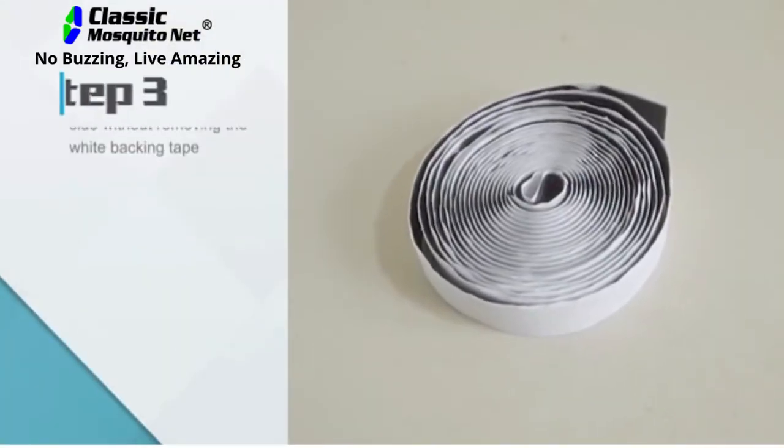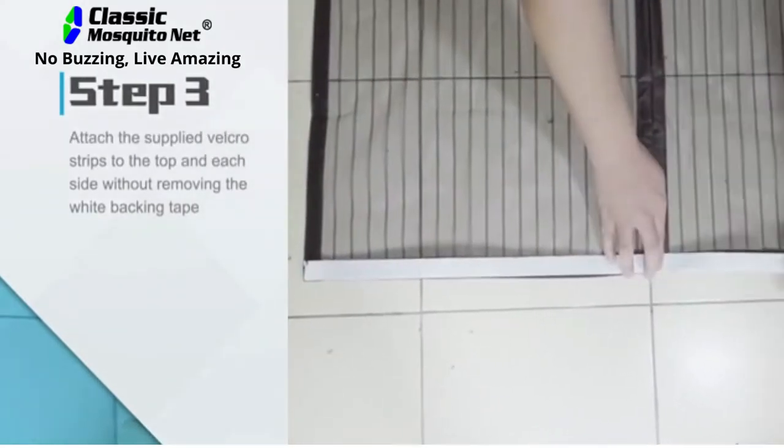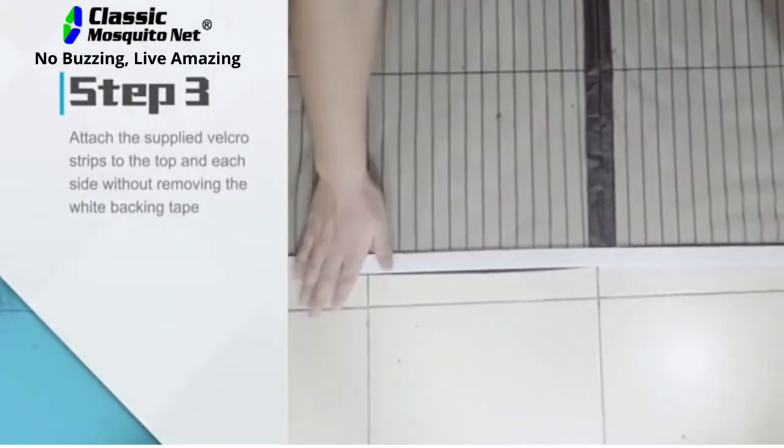Step 3: Attach the supplied Velcro strips to the top and each side without removing the white backing tape.